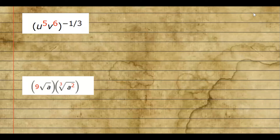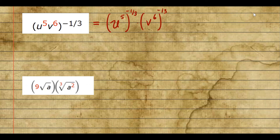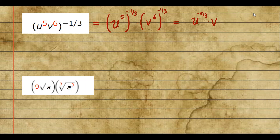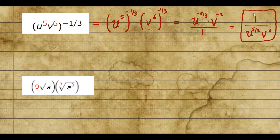For the next example, we distribute the exponent negative one-third over u to the fifth times v to the sixth. This gives u to the five times negative one-third, which is negative five over three, and v to the six times negative one-third, which is negative six over three, or negative two. Making exponents positive by placing terms in the denominator, the answer is 1 over u to the five-thirds times v squared. Since u and v are different bases, we can't combine them further.